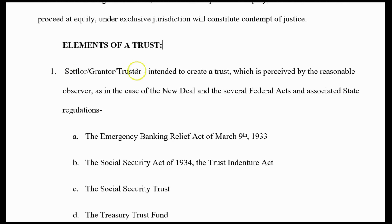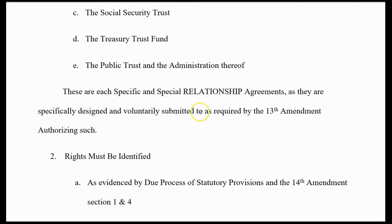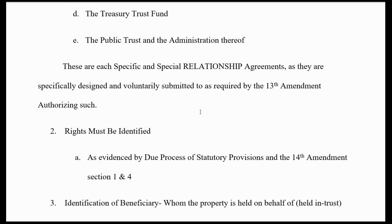There has to be a settlor or grantor — somebody who created, generated, and started the trust. They created trusts by the New Deal, and then there are millions and millions of trusts within trusts under those different acts. There are special relationship agreements you have with that trust organization — through the amendments, the 13th Amendment, and so forth. Rights must be identified — that's the second element.